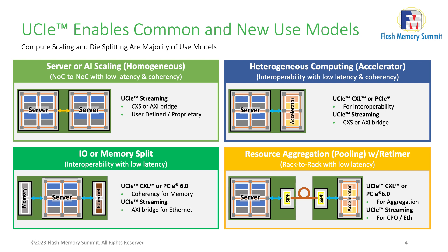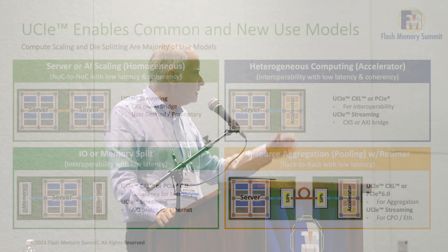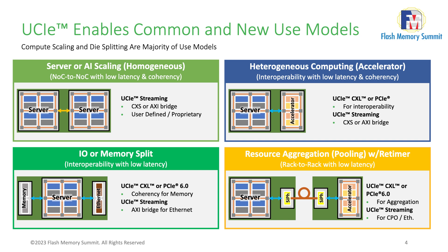Heterogeneous computing is about bringing additional functionality into the die to save power, give it more functionality and more performance. The clear example is bringing an accelerator closer to the server. In the context of storage, you could imagine an offload accelerator brought together with a memory controller for high-performance applications, while not included for applications where it's not needed. This flexibility — the ability to create different SKUs depending on the application — drives a lot of multi-die system adoption.